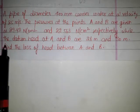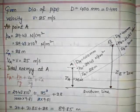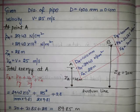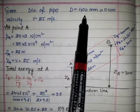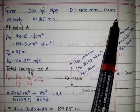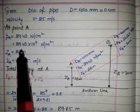We need to find out the loss of head, so this numerical is based on real fluid. Firstly, write down the given variables. Diameter of pipe is 400 mm, equal to 0.4 meter. Velocity V is 25 meters per second.